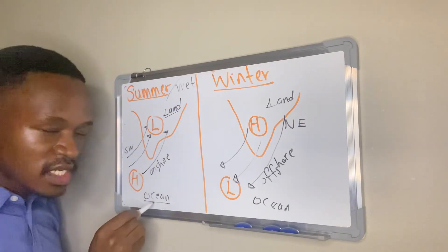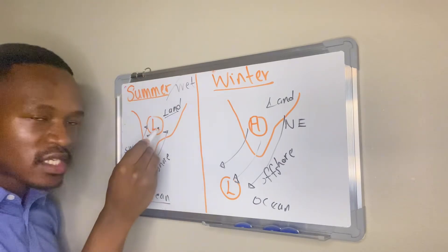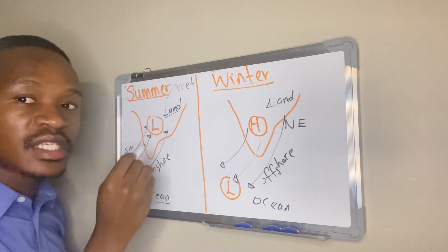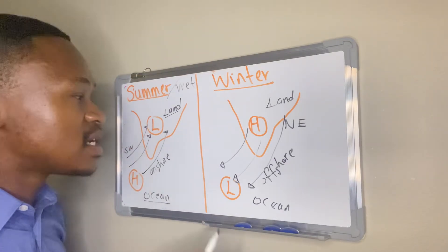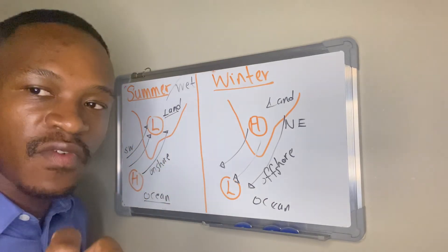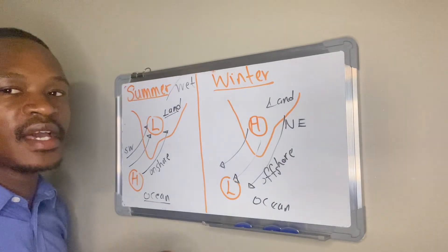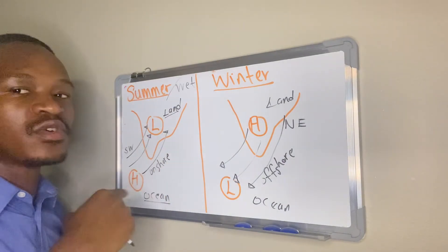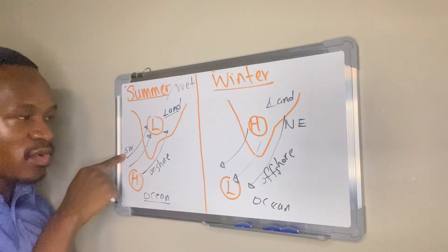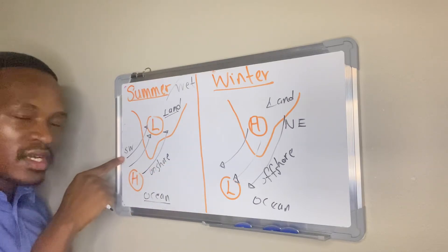Because our ocean carries more moisture, and we have onshore winds from the ocean to land, these onshore winds carry moisture. When they reach the interior, they rise, cool, and condense to form clouds, bringing more rainfall. This is why the summer monsoon is also known as a wet monsoon or southwest monsoon — because these onshore winds come from the southwest.